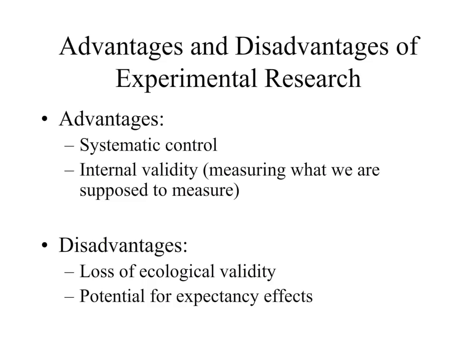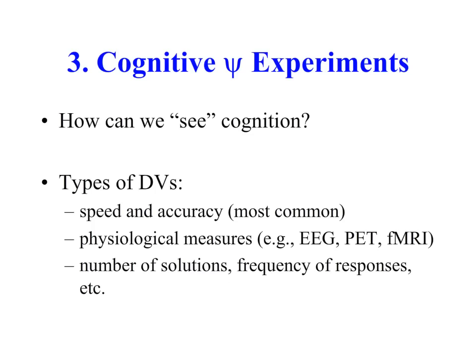What are the advantages and disadvantages of experimental research? Some of the advantages are systematic control in the experiment and internal validity — that is, we're measuring what we're supposed to measure. The disadvantages are the loss of ecological validity and the potential for expectancy effects. Note that the distinction between quasi-experimental and experimental methodologies will arise in the Cognitive Psychology Experiments section of this module.